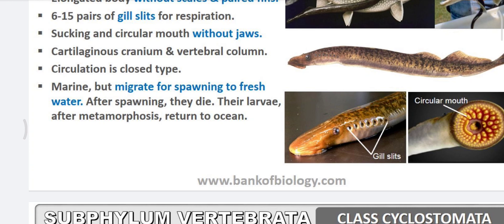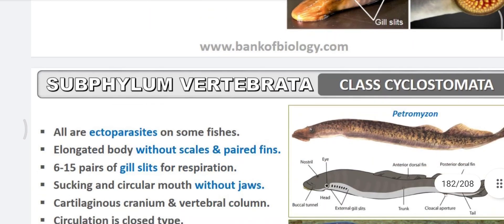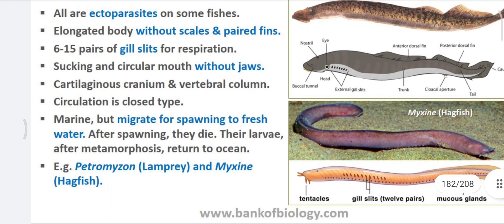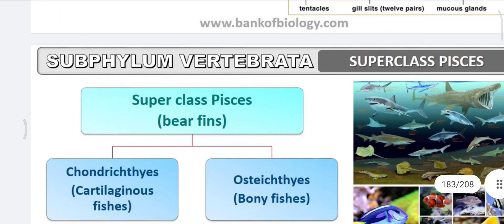For spawning, they move from marine water to fresh water. After laying eggs, the adult dies within two to three days, and the larvae return to the same habitat. After metamorphosis, larvae return to the ocean. This is anadromous migration, whereas catadromous migration is from fresh water to sea water. Examples are Petromyzon, commonly called lamprey, and Myxine, also called hagfish.